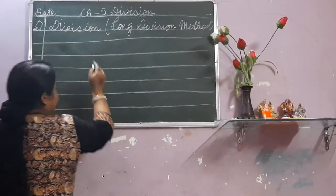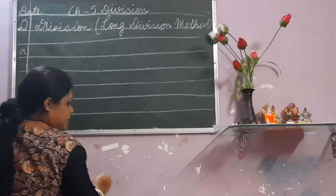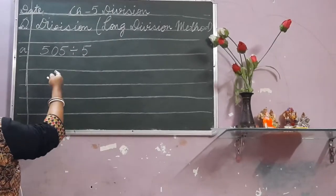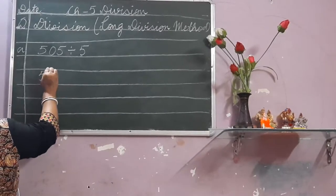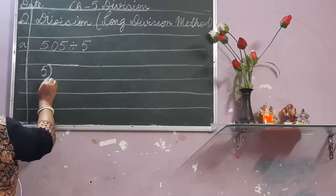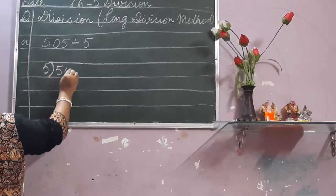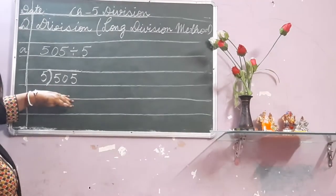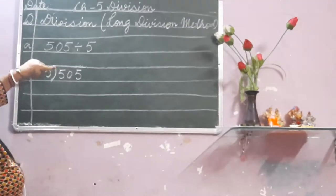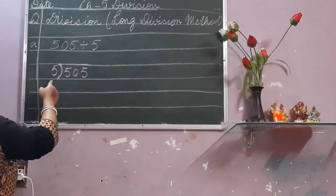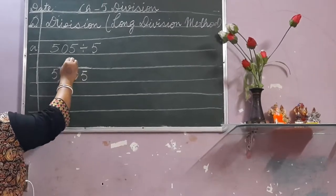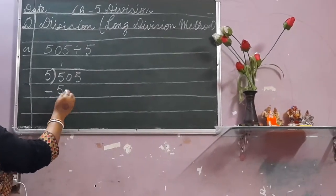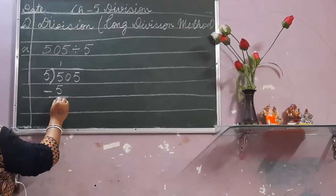After writing the question, leave a line and write the first question: 505 divided by 5. Again leave a line and do the solution. Draw the division sign — divisor 5, then 105. Now you have to write the quotient above this line, unlike short division where you wrote it below. So: 5 ones are 5. Write the quotient digit, then write the minus subtraction sign and draw a small line.